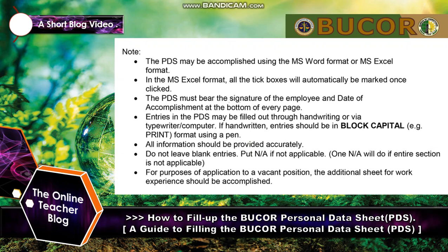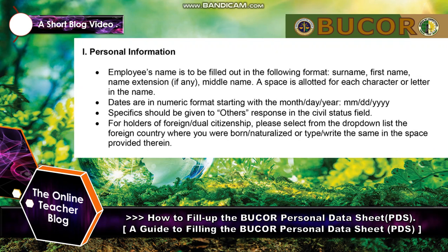For purposes of application to a vacant position, the additional sheet for work experience should be accomplished. Section 1 — Personal Information: the employee's name is to be filled out in the following format: Surname, First Name, Name Extension (if any), Middle Name. A space is allotted for each character or letter in the name. Dates are in numeric format starting with month, then year. Specific attention should be given to responses in the civil status field.